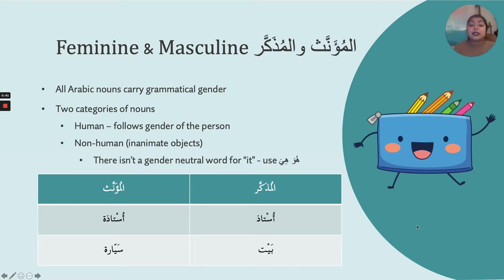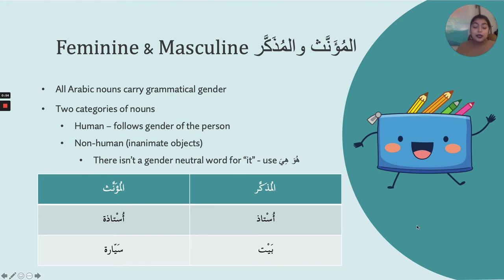Today's grammar lesson, we're talking about a couple of things. The first is gender. When we talk about Arabic nouns — so in today's lesson we're focusing just on nouns. Just ignore verbs right now. I know in the vocab lesson we went over a lot of verb conjugations, so right now put that out of your mind. We're not thinking about verbs; we're thinking about nouns.